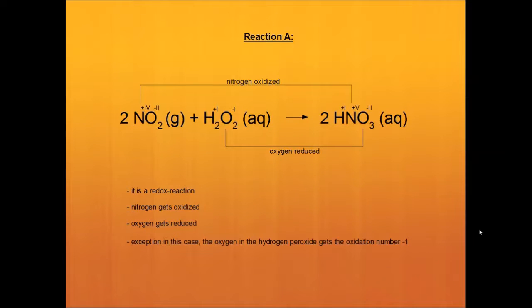Reaction A. Two nitrogen dioxide and hydrogen peroxide react to two nitrate acid. Let's take a look at the oxidation numbers.